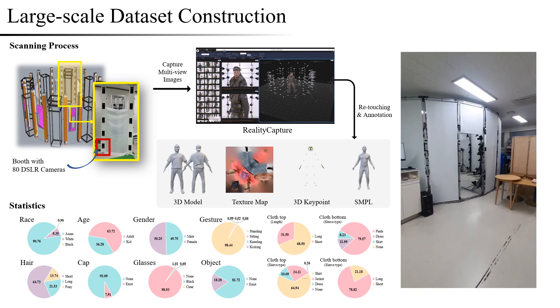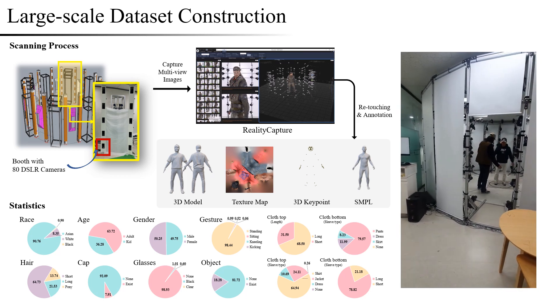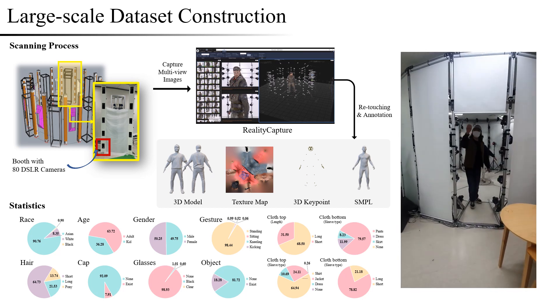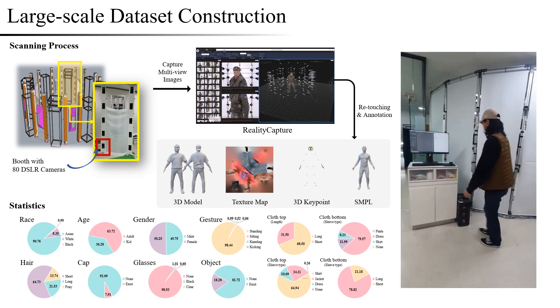Our dataset made an effort to balance 2,000 people in various characteristics such as race, gender, age, and hairstyle, as shown in the statistics.